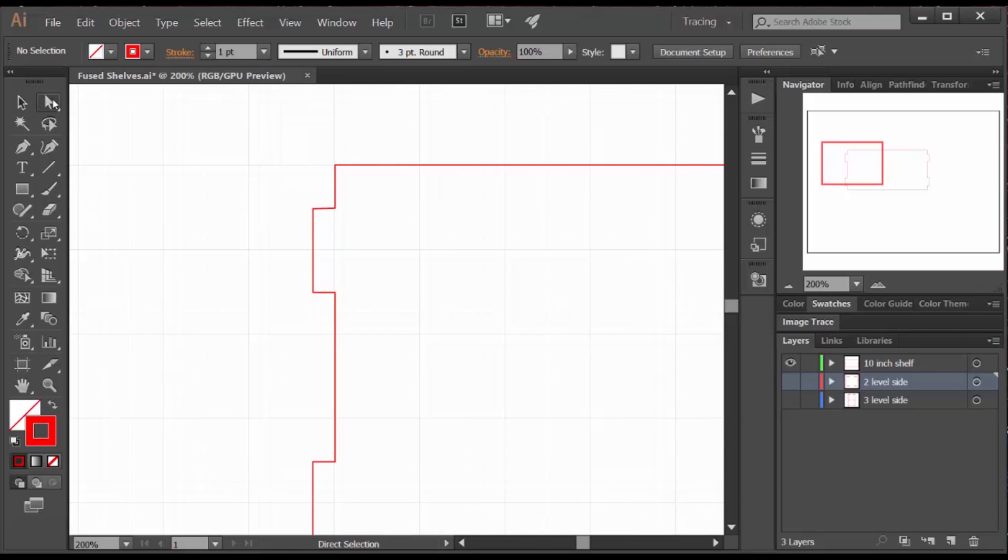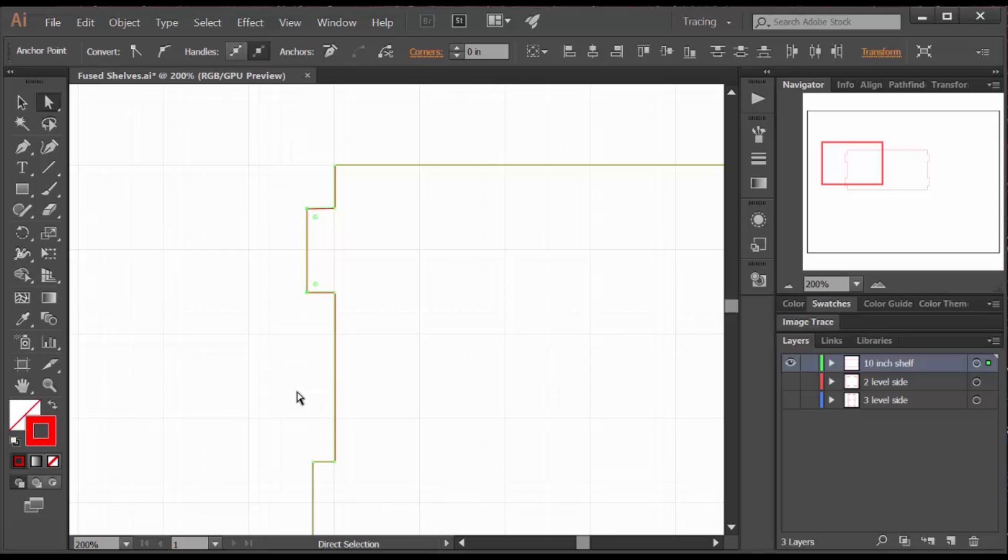Use the direct selection tool to pick multiple points, in this case I'm grabbing two points, and I'm using the arrow keys to move them out to the left and to the right, and this lets you move things very consistently and accurately along the grid.